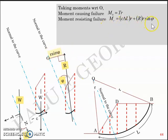So you have two moments which contribute to the resisting failure and both are anti-clockwise, whereas the moment causing failure MO equal to T multiplied by R is clockwise with respect to the center.